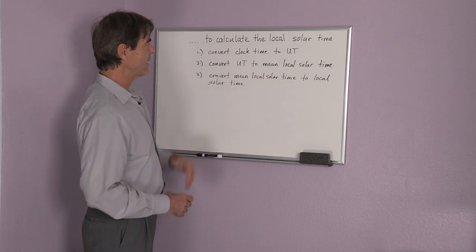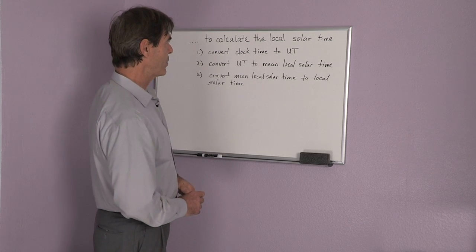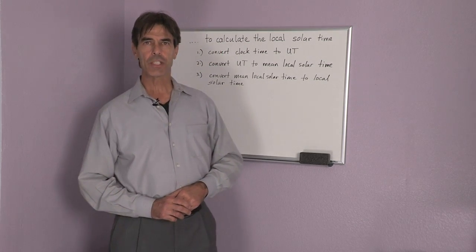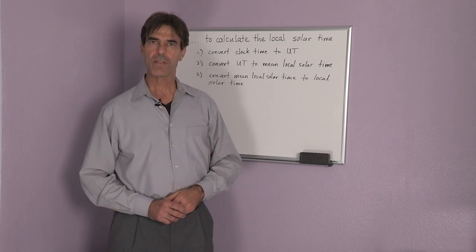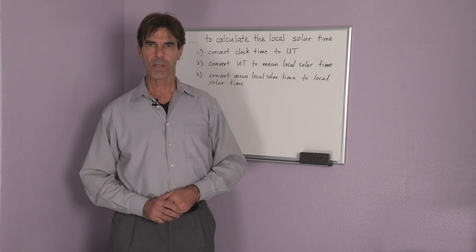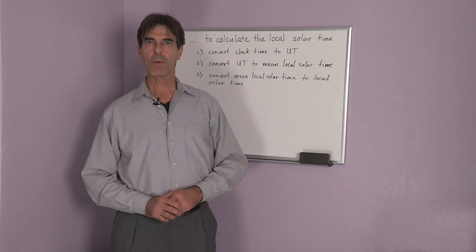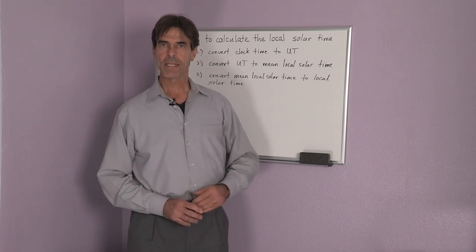I then convert the universal time to the mean local solar time. And that depends on the longitude. Here in Pasadena, we're at a longitude of 118.14 degrees. So I divide 118.14 by 15 to get that correction.